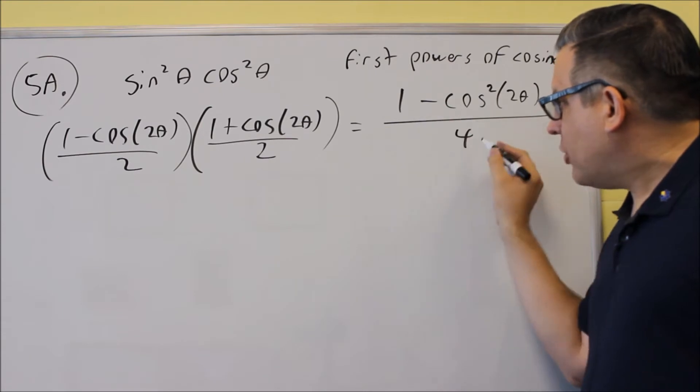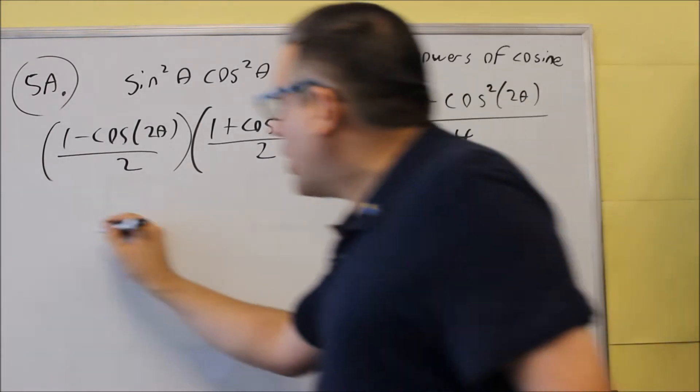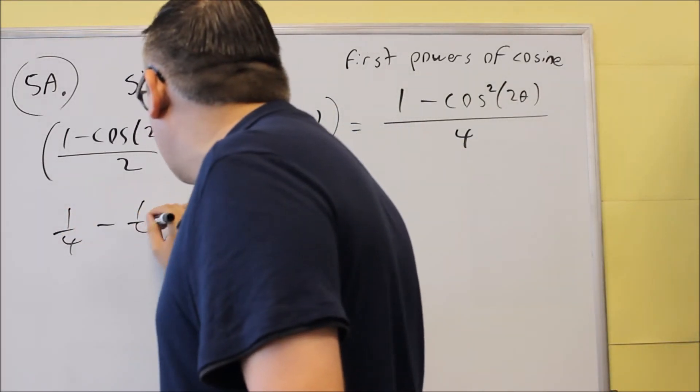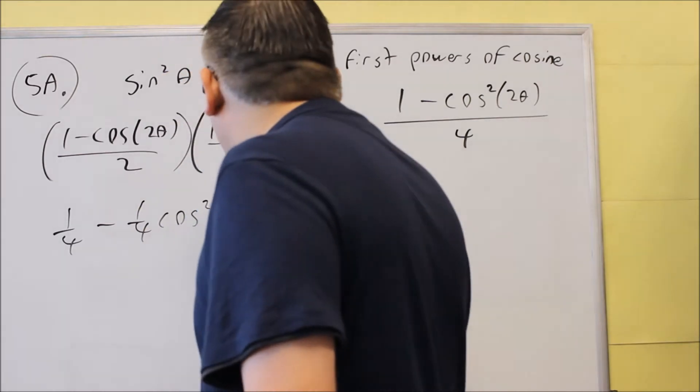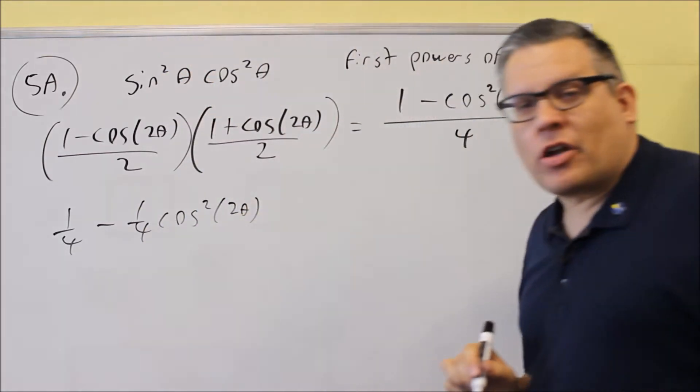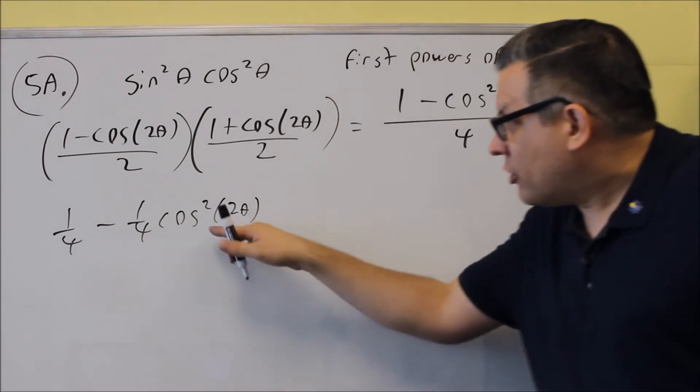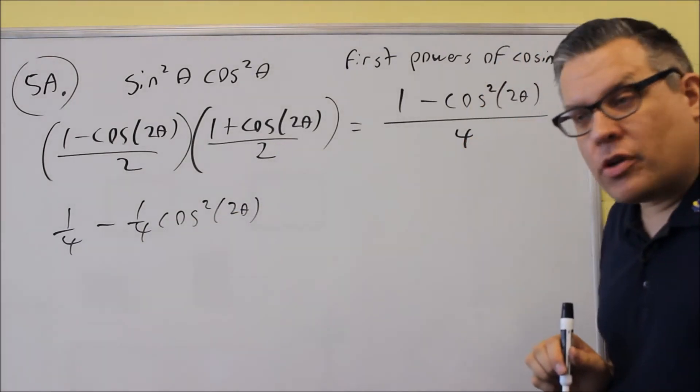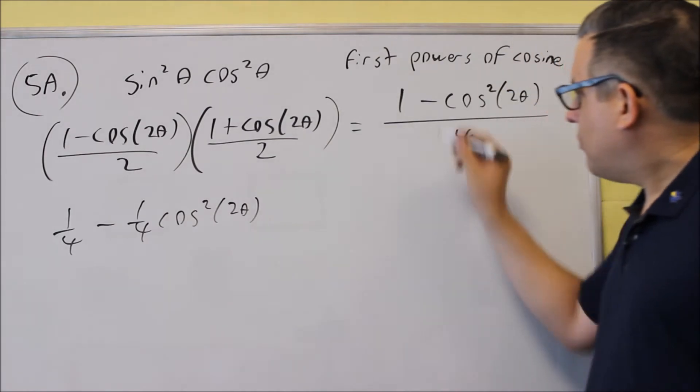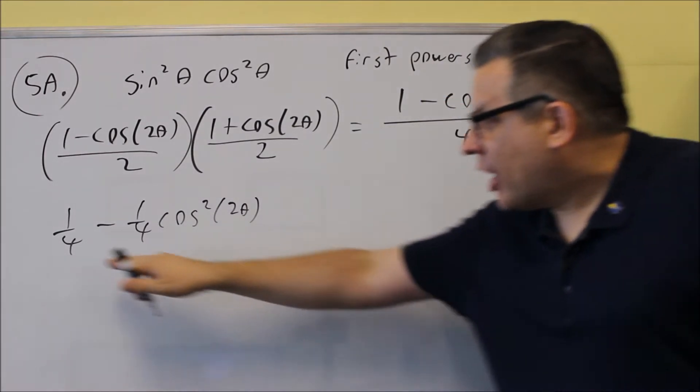The first thing I'll do is I'm going to split up the fraction. And I'm going to write this as a 1 fourth minus a 1 fourth cosine squared of 2 theta just to make it a little bit easier so I don't have a fraction over a fraction when I work with the other power reducing formula.